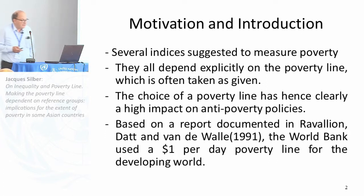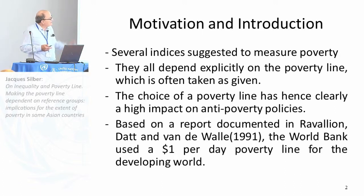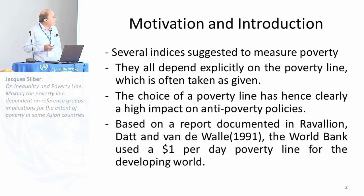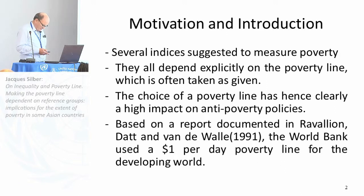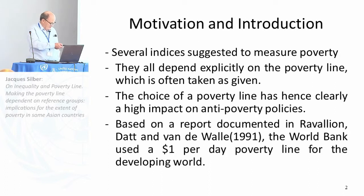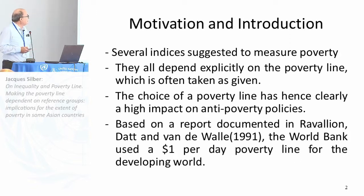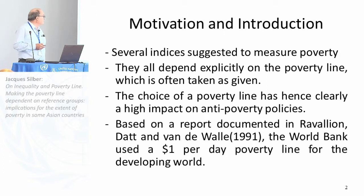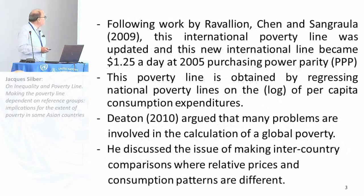I will not go into many details concerning the axiomatic derivation — I'll give you the intuition. After a survey of recent work on the importance of the reference group, I'll do the axiomatic presentation and then give some results of our empirical application. Choosing a poverty line has a lot of impact from a policy point of view. The World Bank in 1991, following work by Martin Ravallion and Van de Walle, fixed the absolute poverty line at one dollar.